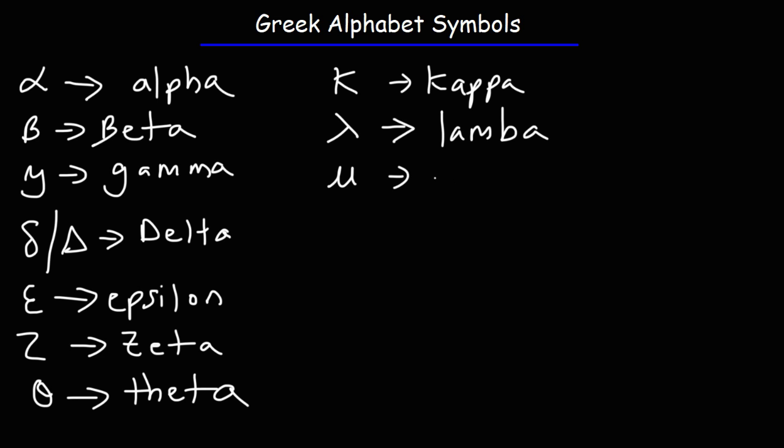Next we have the symbol mu, and you've seen this in terms of units. Think of micrometers or micrograms. Next we have the Greek symbol nu which looks like a v. This represents frequency when dealing with waves.